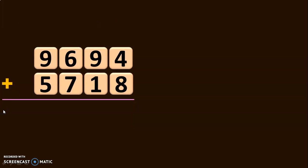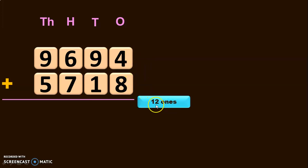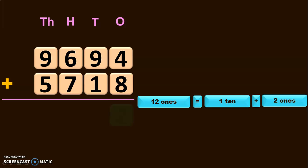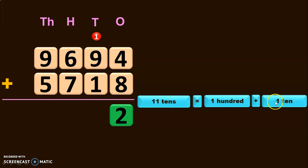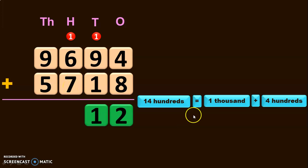Let us do one more example. We have 9,694 plus 5,718. Write down the place values and add the digits in the ones place. 4 plus 8 will give you 12 ones. 12 ones is nothing but 1 ten plus 2 ones. So 2 is retained in the ones place and 1 is carried over to the tens place. 1 plus 9 will give you 10, and 10 plus 1 will give you 11 tens. 11 tens can be regrouped as 1 hundred plus 1 ten. So the 1 ten is retained in the tens place and the 1 hundred is carried over to the hundreds place. 1 plus 6 will give you 7, and 7 plus 7 will give you 14 hundreds. 14 hundreds can be regrouped as 1,000 plus 4 hundreds. So the 4 is retained in the hundreds place and 1 is carried over to the thousands place.